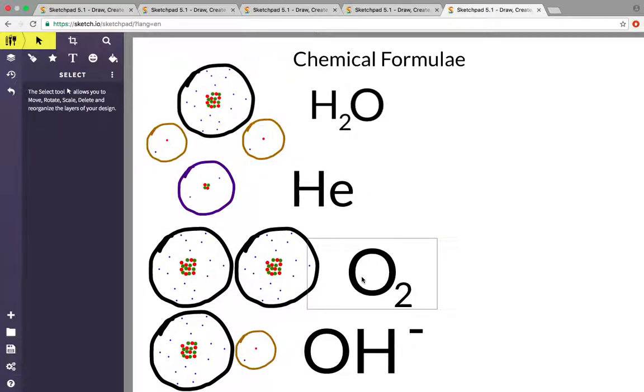Oxygen, again, this is an element, but it's made up of two different atoms of oxygen. So you write O2, because you have two oxygens, two oxygen atoms.